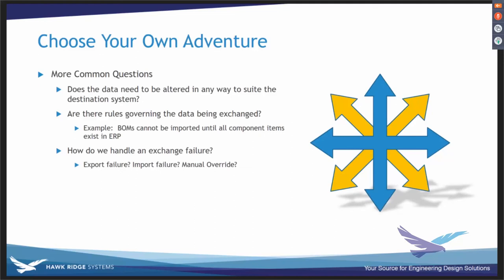One thing that's easy to overlook is how we deal with failures. There's error handling done in code, and we need to define what happens in an integration when an export or import fails. Is this a stoppage? Do we send out emails so somebody can investigate why the export or import failed? What happened with the rules in the middle? These are all important design decisions.